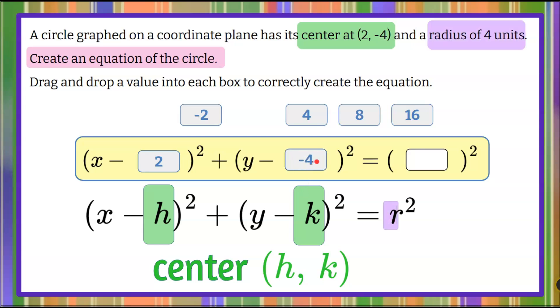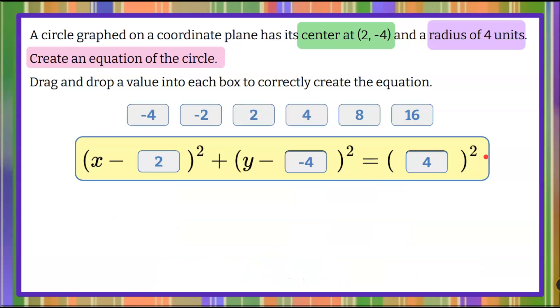Now the next bit of information we need is our radius, and we're told the radius is 4 units. So we're going to come over here and take our 4 and bring it over to r, 4 squared.